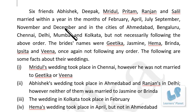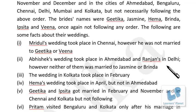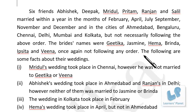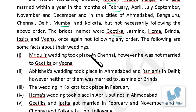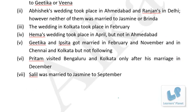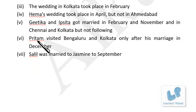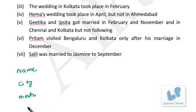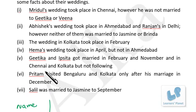Next: six friends — Abhishek, Deepak, Mridul, Preetam, Ranjan and Salil — married in a year, in given months, in given cities, and names of the brides are also given. This is a puzzle based on arrangement with four variables: name, month, city and bride. Instead of making a matrix, just write down all the variables in a column — name, city, month and bride — and complete the column with the given facts.